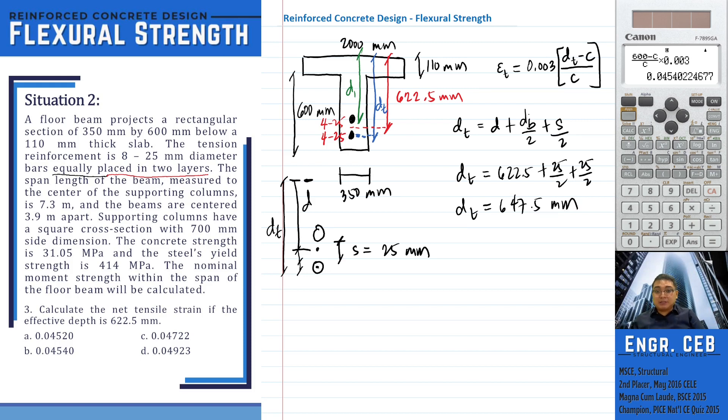We already have D sub T, so let us now compute for C. So take note, the relationship of A and C is beta times C. We already know the value of A, so let us now compute the value of beta.